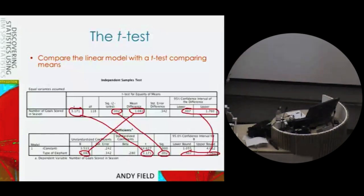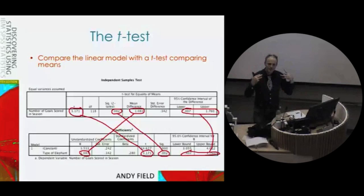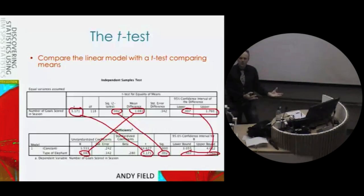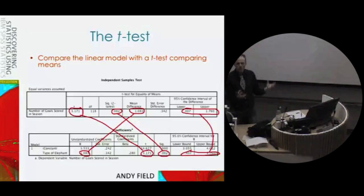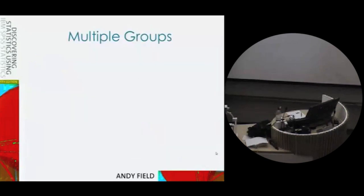Categorical predictors are not a problem for the linear model. When you use categorical predictors with this dummy coding system, you're effectively looking at differences between means — but it's the same system, the same framework we've been building all term. Everything we've learned carries forward.